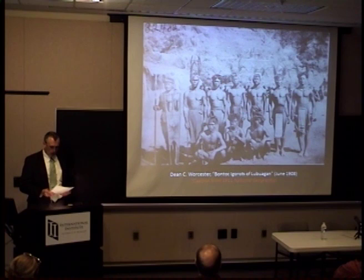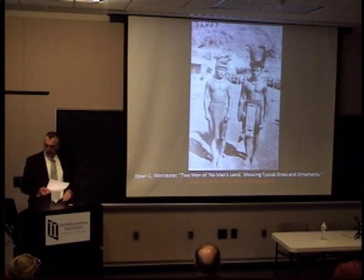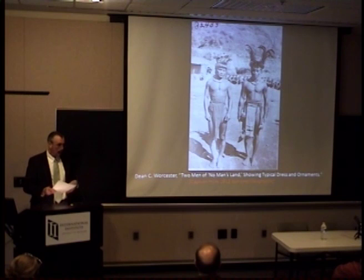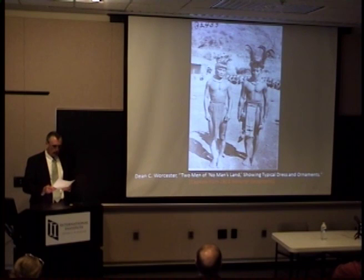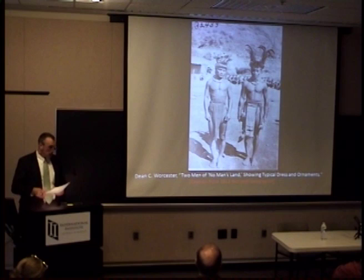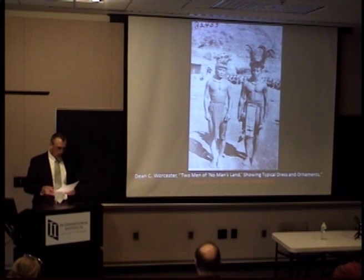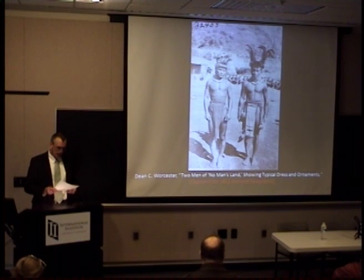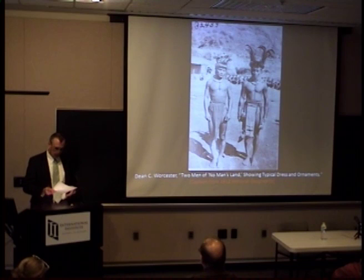For his 1912 National Geographic article, Worcester changed both the identity of the subjects and the suggested meaning of the photograph. The caption read: 'Two men of no man's land showing typical dress and ornaments,' with a description: 'These people are the last to come under government control and isolated cases of head taking still occur among them.' Remember — these are dancers at a festival, but now they are presented as headhunters holding axes. There is no explanation for why Worcester decided to reframe Madalom and the others, removing them from the category Bontok Igorot and placing them into the liminal zone of no man's land.